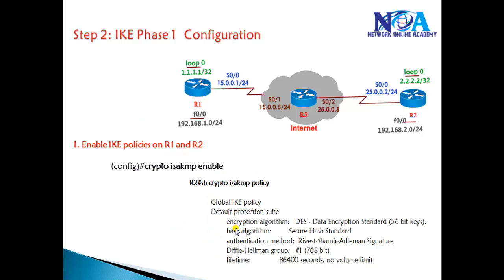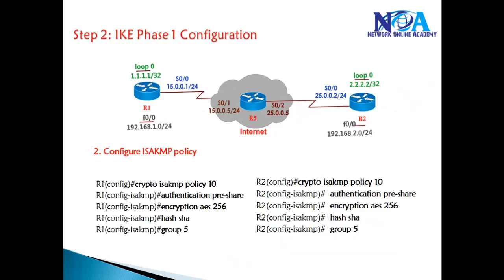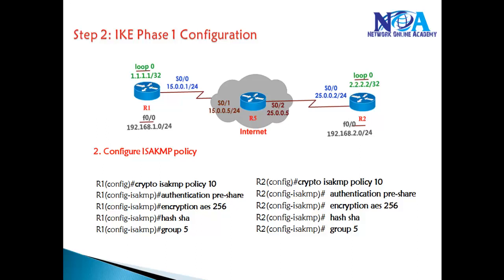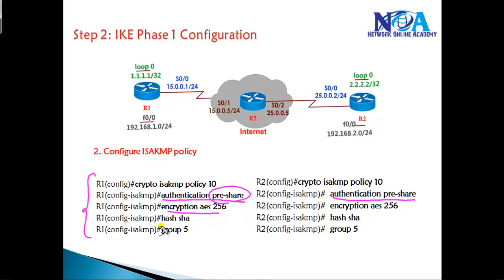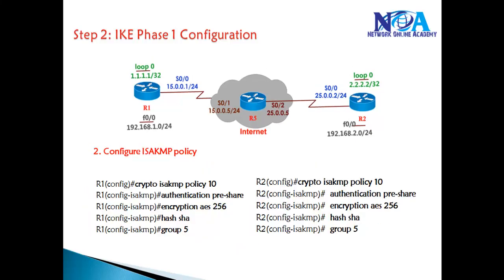If you want to create your own ISAKMP policy — defining your own authentication method and hashing algorithm — you use: crypto isakmp policy [number]. The number defines the priority order of the policy, and you can have multiple policies on the same router. You then specify: authentication pre-shared key, your encryption method, hashing algorithm, and Diffie-Hellman group for secret key exchange. The same configuration must be done on Router 2 as well.